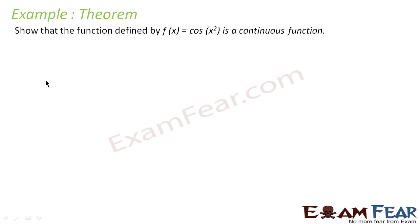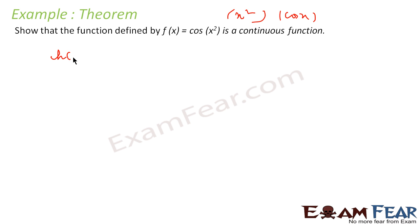Let's take one more example: f(x) = cos(x²). Here, I know x² is a continuous function and cos x is also a continuous function. So let h(x) = cos x and g(x) = x².